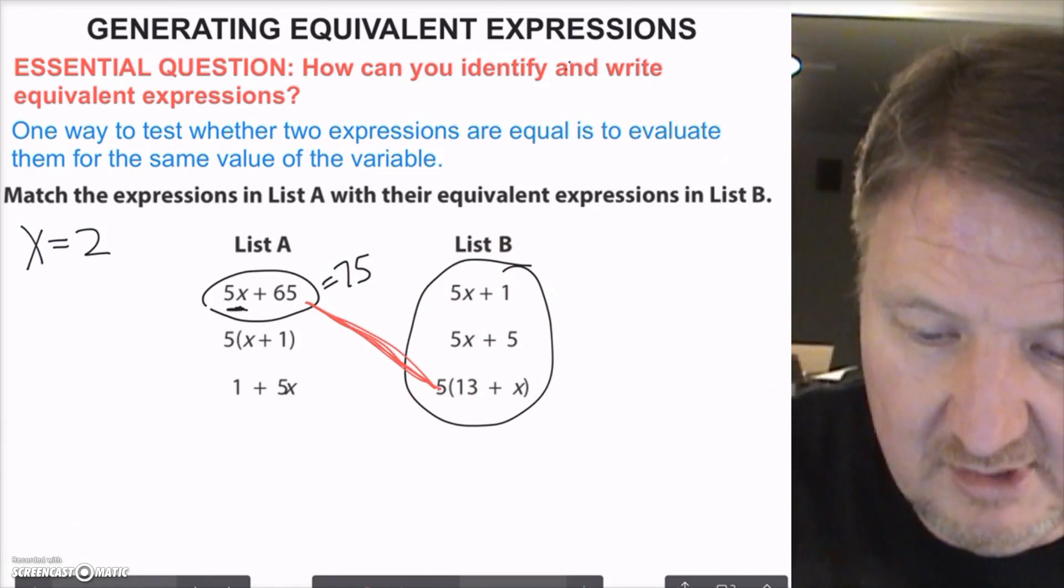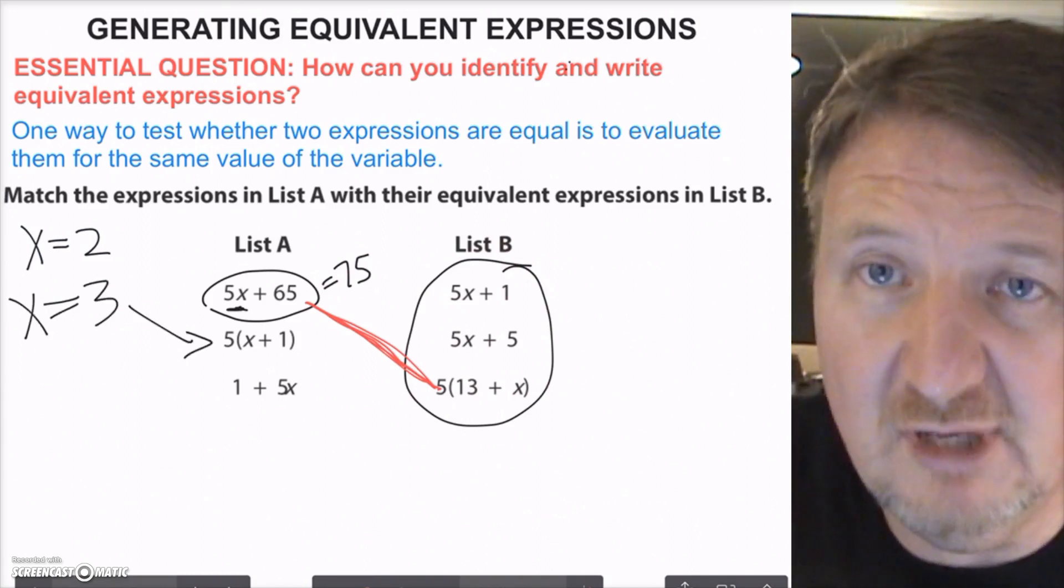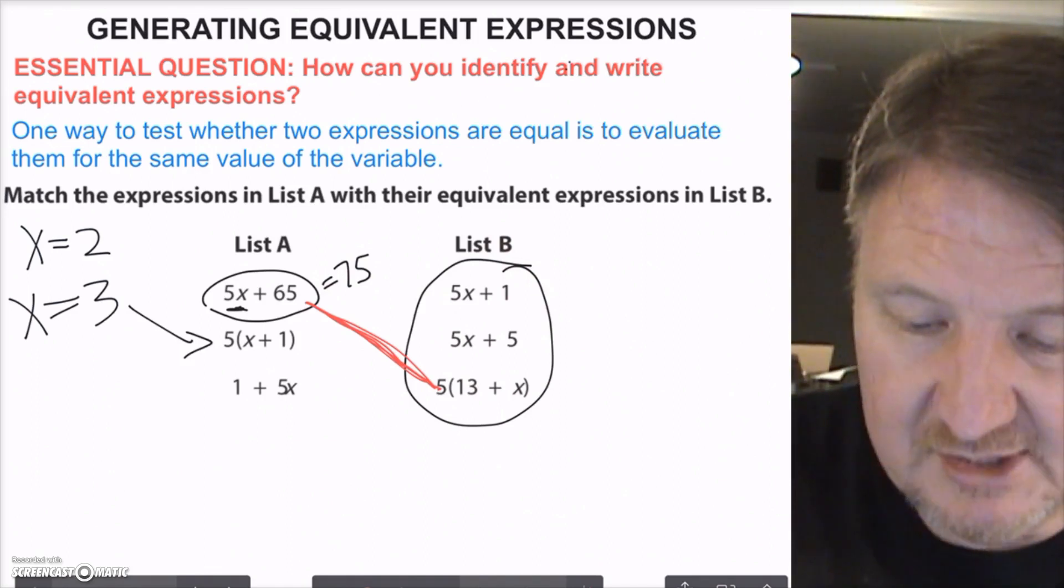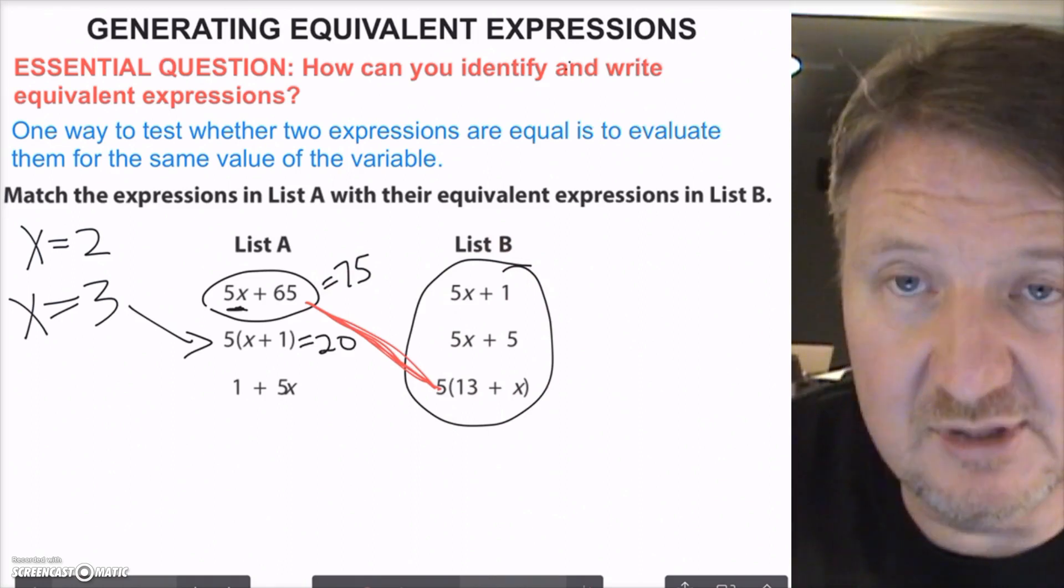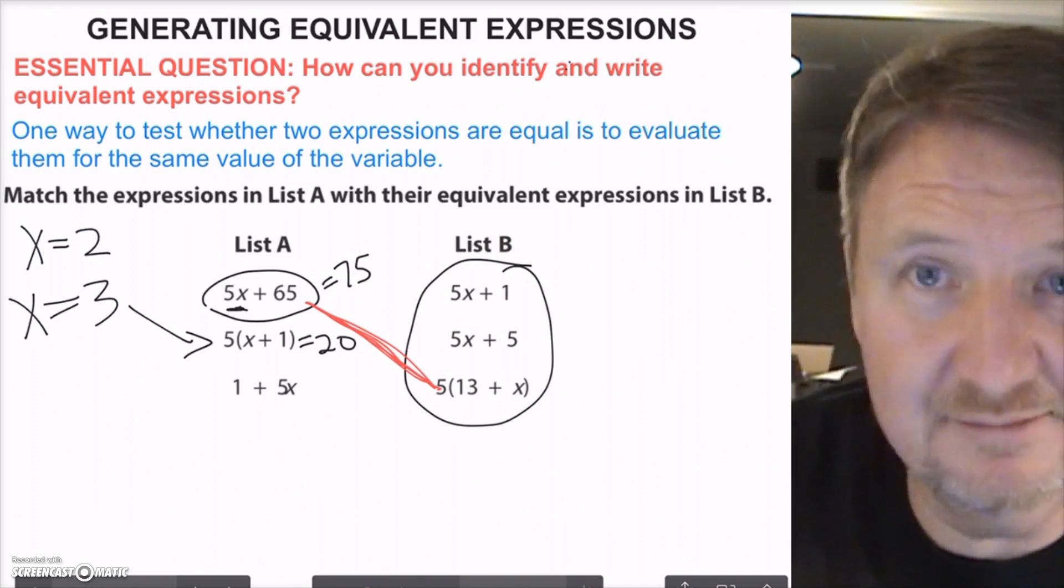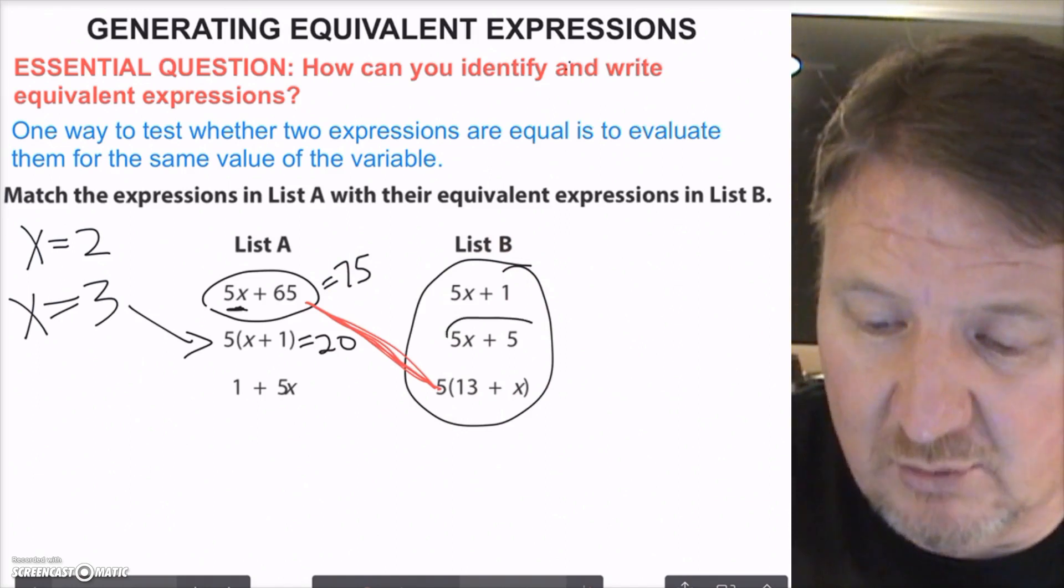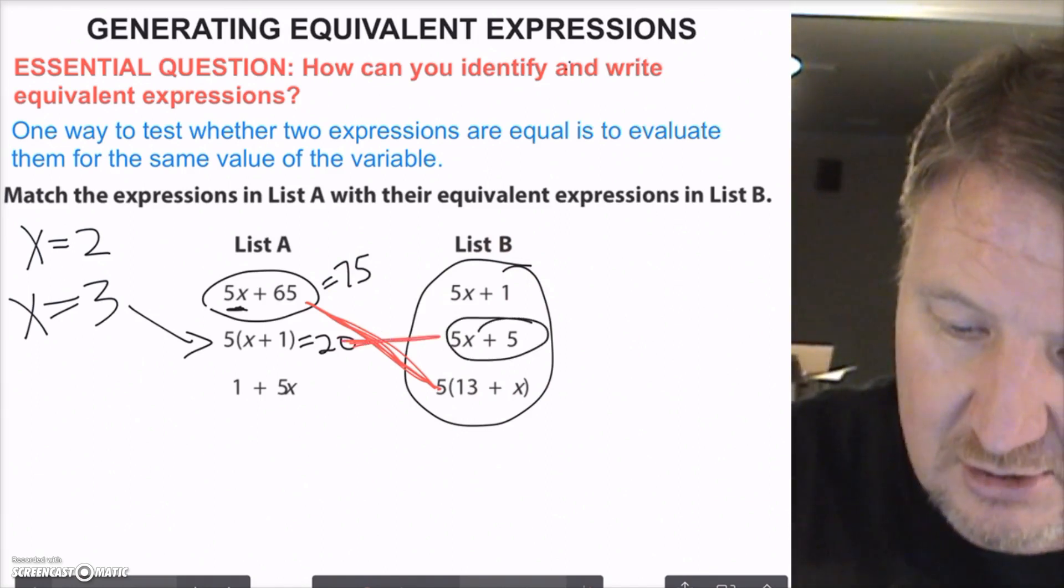Let's look at the next one. Let's go ahead and change it. Let's just say x equals 3 on this one. You don't have to, you can use 2 every single time if you want to. I'm just showing you how it works. So I say 3 plus 1 is 4, times 5 is 20. So if one of these remaining two equals 20, then I'll be in good shape. So I say 5 times 3 is 15, plus 1 is 16. It's not that one. 5 times 3 is 15, plus 5 is 20. Guess what? I have a match, boys and girls. These two are matches.